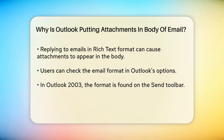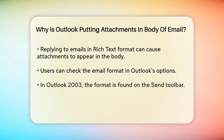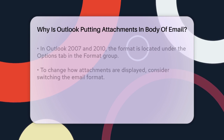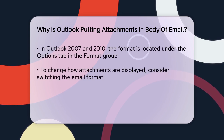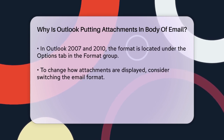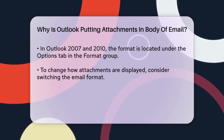To check the format of your email, you can look at the options in Outlook. For example, in older versions like Outlook 2003, you can find this on the Send toolbar, where there's a drop-down box that shows whether the email is in HTML, rich text, or plain text. In newer versions like Outlook 2007 and 2010, you can find this under the Options tab in the Format group.